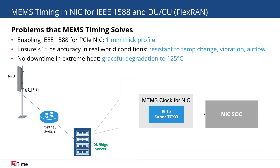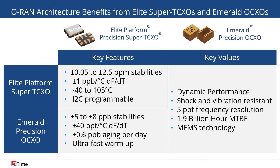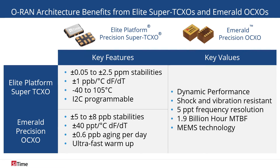Additionally, even in extreme heat, Elite degrades gracefully, translating to no downtime or major disruptions in the system. Our line of precision oscillators offers a range of frequency stabilities between 5 and 250 ppb, and frequency slope between 1 ppb and 40 ppt. Along with tight stability options and leading frequency over temperature slope, Sightime's precision TC-XOs and OC-XOs also offer industry-leading shock and vibration resistance for extreme environmental robustness.